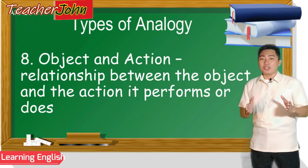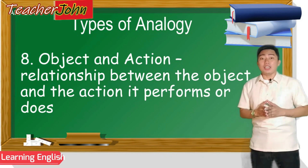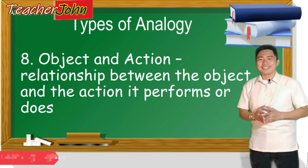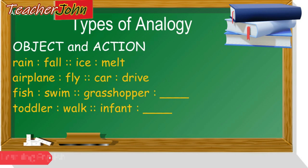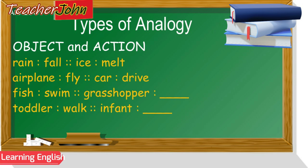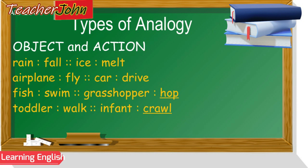This type of analogy shows the relationship between the object and the action it performs or does. Read these examples with me: Rain is to fall as ice is to melt. Airplane is to fly as car is to drive. Fish is to swim as grasshopper is to hop. Toddler is to walk as infant is to crawl.